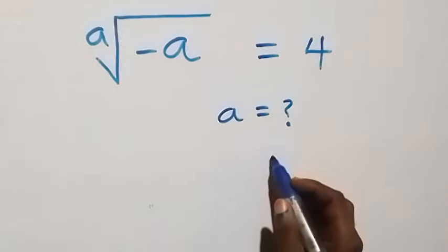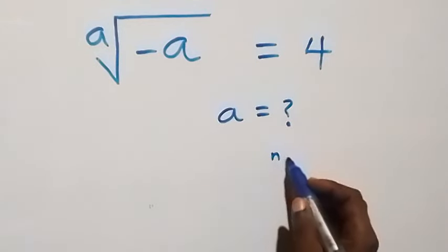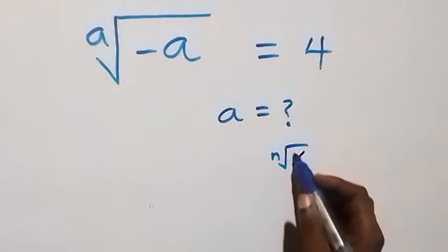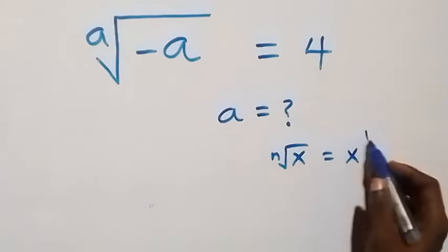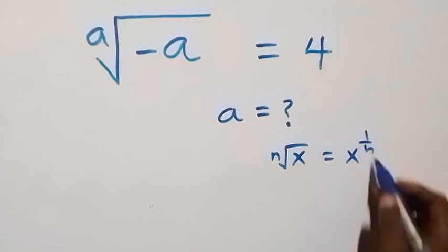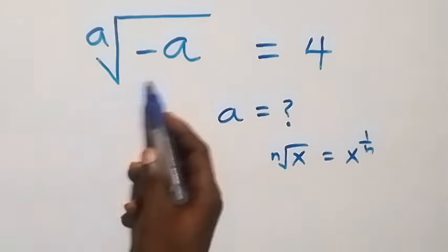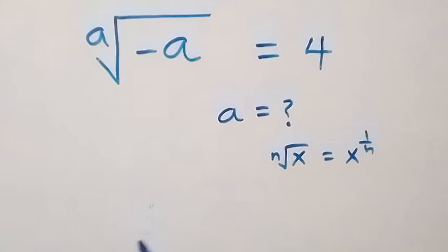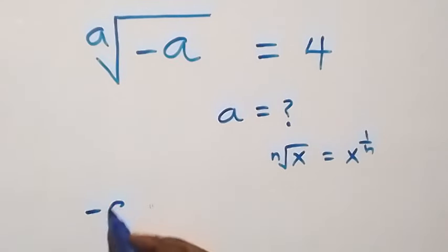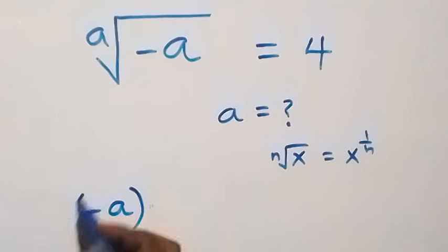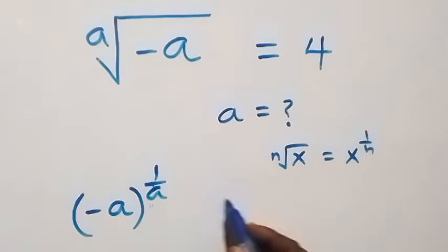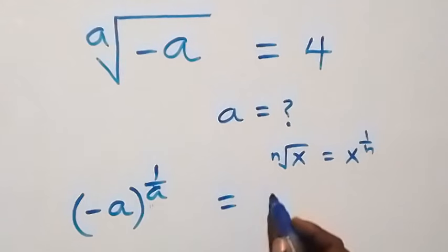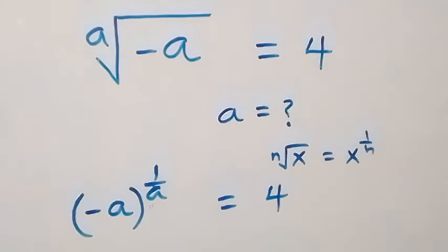When we have the nth root of x, we can write this as x raised to the power 1 over n. And from what is given here, it means that we can write this as minus a raised to power 1 over a, now equals to 4 on this side.